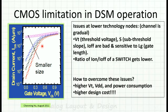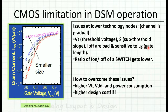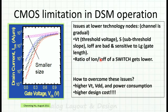In deep sub-micron technology, the sub-threshold slope becomes very bad — current never becomes zero and there is leakage. The threshold voltage and sub-threshold slope are proportional to LG, the gate length. Ioff should be zero but there is sub-threshold conduction, so Ioff is not zero. The Ion-to-Ioff ratio is the key metric for a switch — ideally infinite, but because of finite Ioff it becomes a small finite number, which is very bad in deep sub-micron.